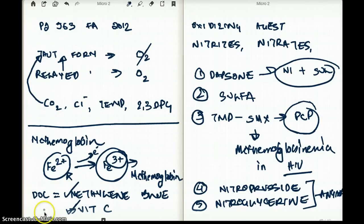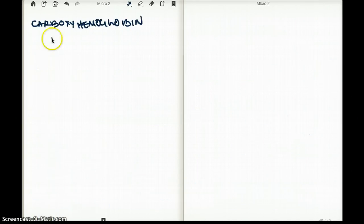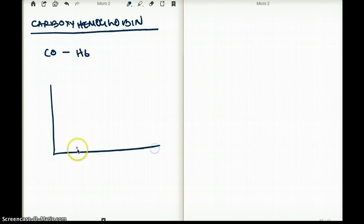Now let's talk about carboxyhemoglobin. Now carboxyhemoglobin is a binding of carbon monoxide with hemoglobin. This will shift the oxygen dissociation curve to the left. And the reason for the left shift is because the carbon monoxide binds to hemoglobin with high, high affinity.